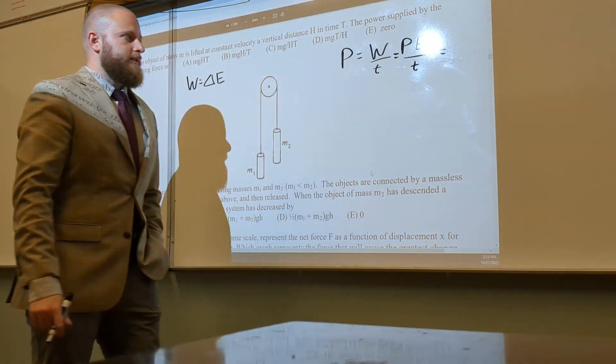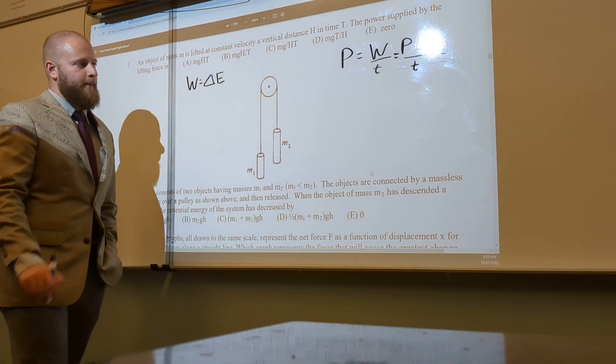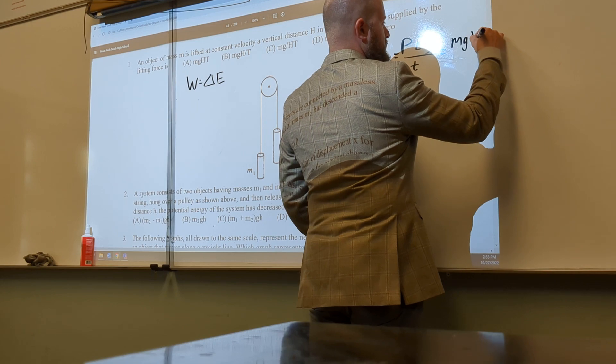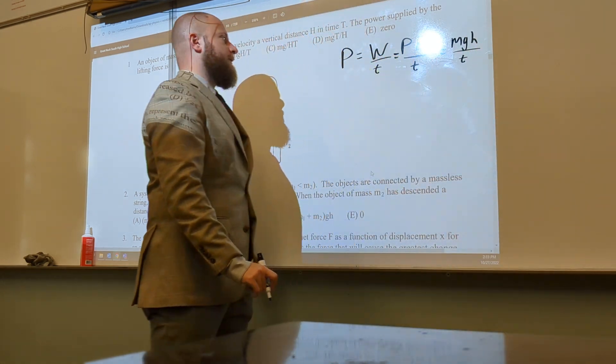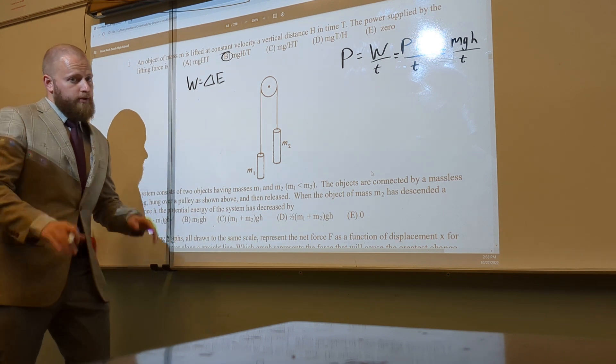Now we can probably already see what the answer might be, right? The formula for PEG is m g h over t. So that would make our answer. This one shouldn't have been too hard for us.